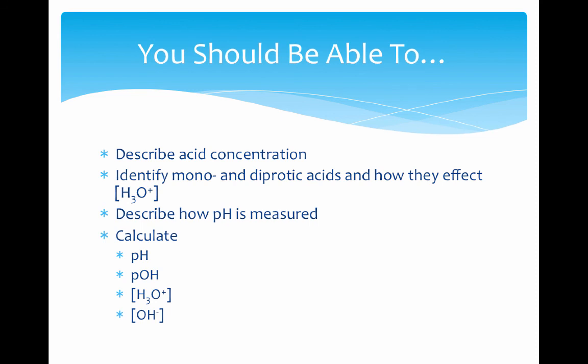To wrap things up, here's a list of things you should be able to do as a result of this video and the subsequent class practice. You should be able to describe what acid concentration is. Identify acids as monoprotic or diprotic and use how that information affects the concentration of H3O+. Describe how pH is measured using either pH paper or a digital probe. And last but not least, calculate pH, pOH, concentration of acid, concentration of base from any one of the four values. You should be able to quickly interchange between them. As always, we'll practice a bunch in class until you feel more comfortable. If you have any questions, make sure to write them down and bring them in.